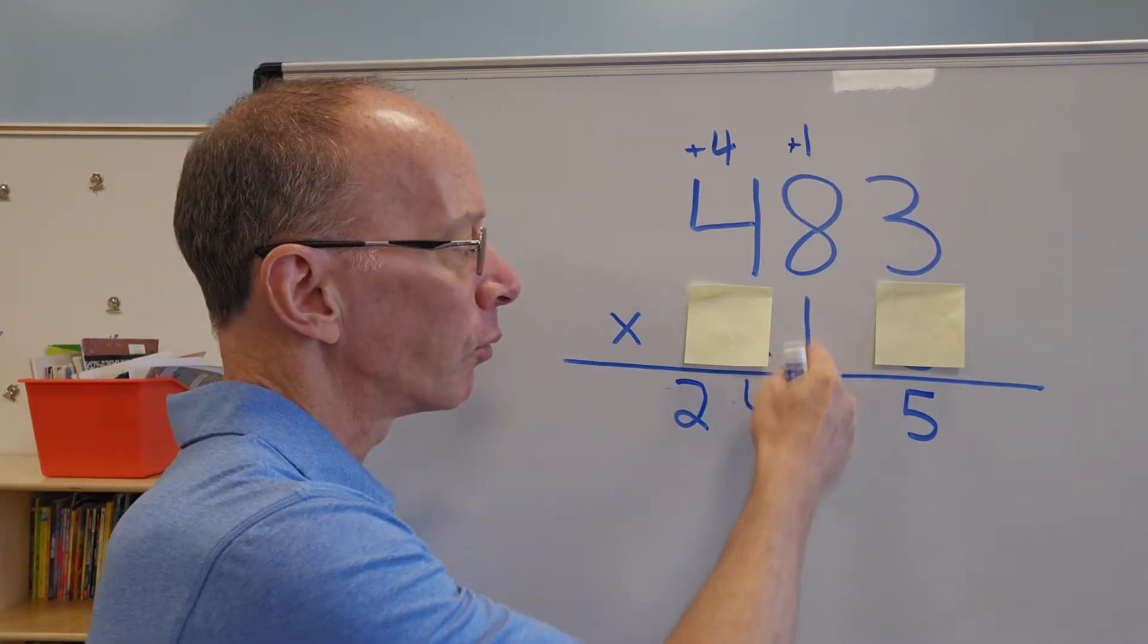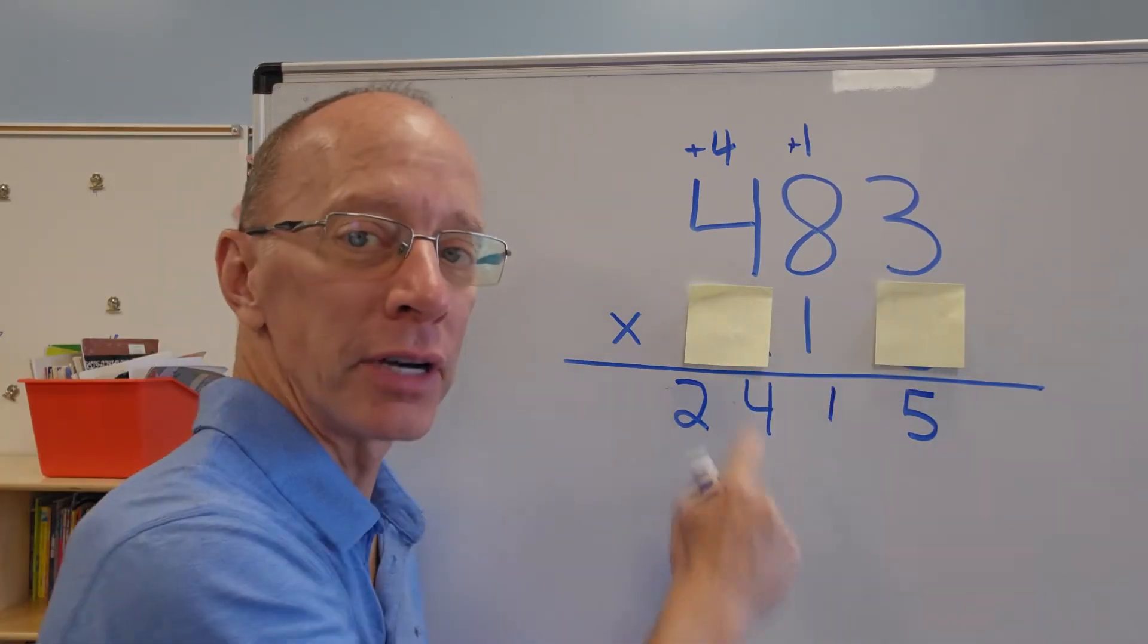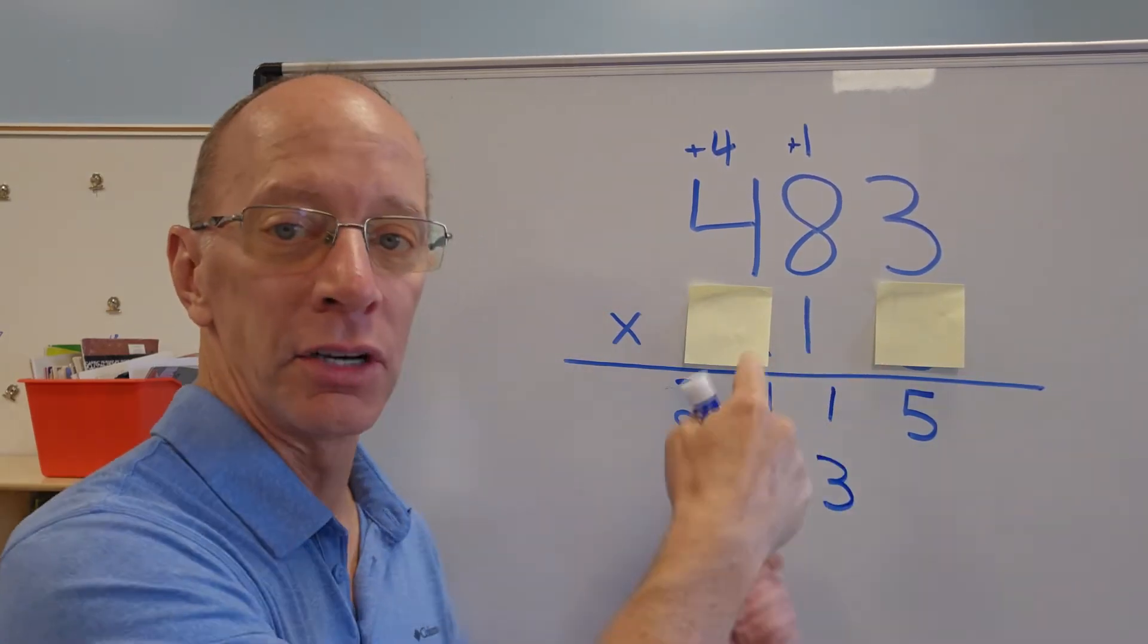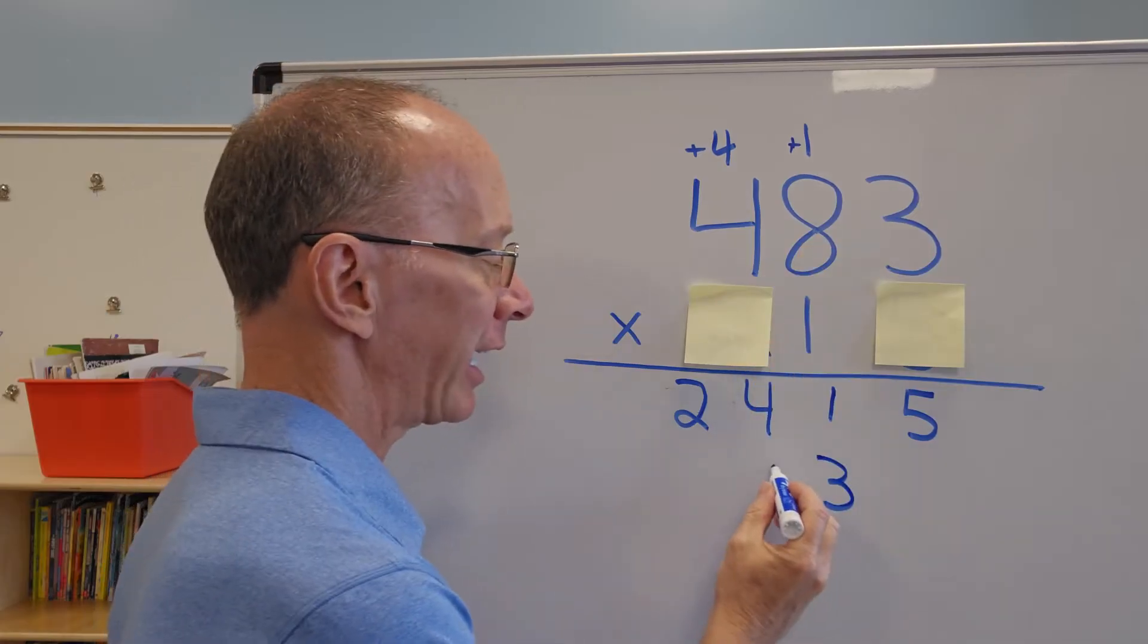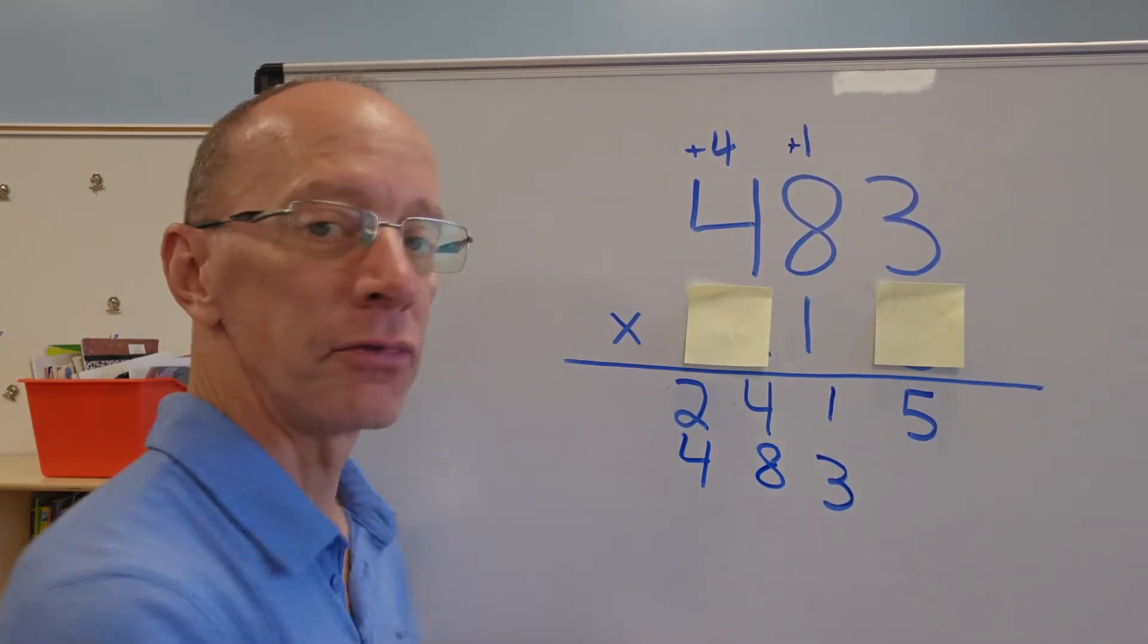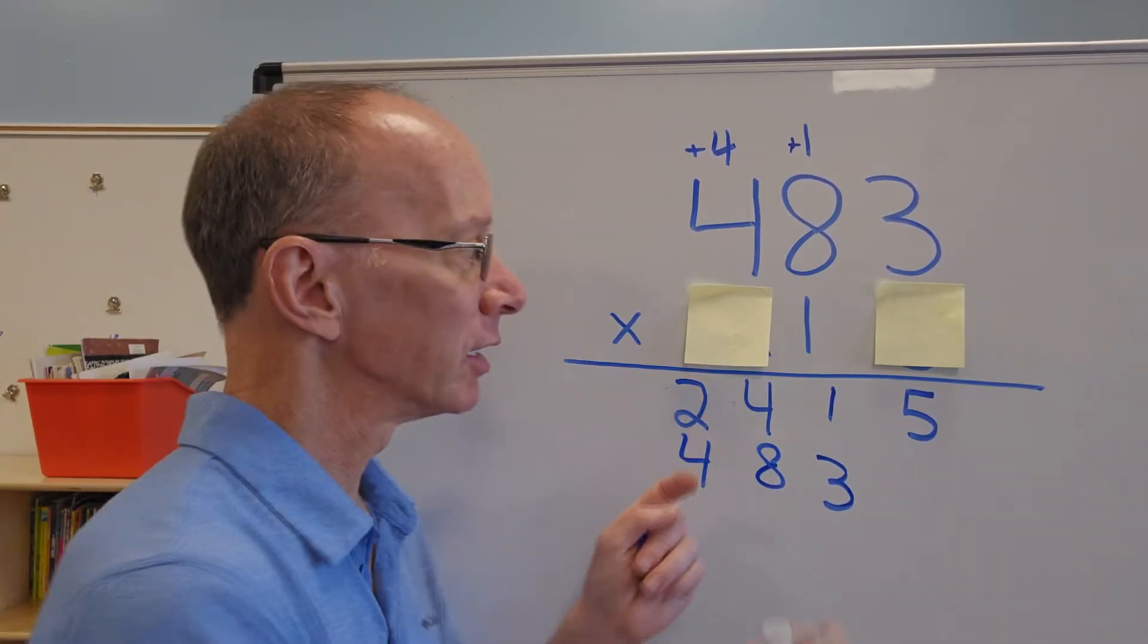I start right below the one right here. So one times three is three. So I put the three right here. And then I continue on. One times eight is eight. And then one times four is four. All right. Finished everything. Now I move on to the next number.